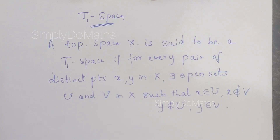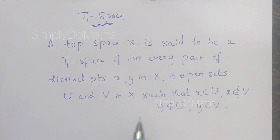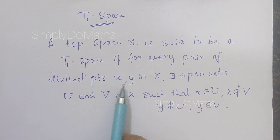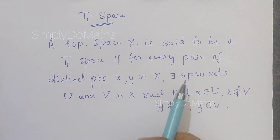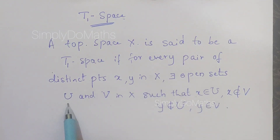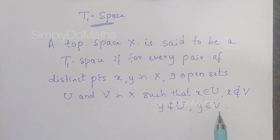In T0 space we have two distinct points x and y and only one open set, but in the case of T1 space we again have two distinct points x and y and consider two open sets U and V such that one element belongs to one open set and the same element doesn't belong to the other open set. Another element belongs to open set V but doesn't belong to U.